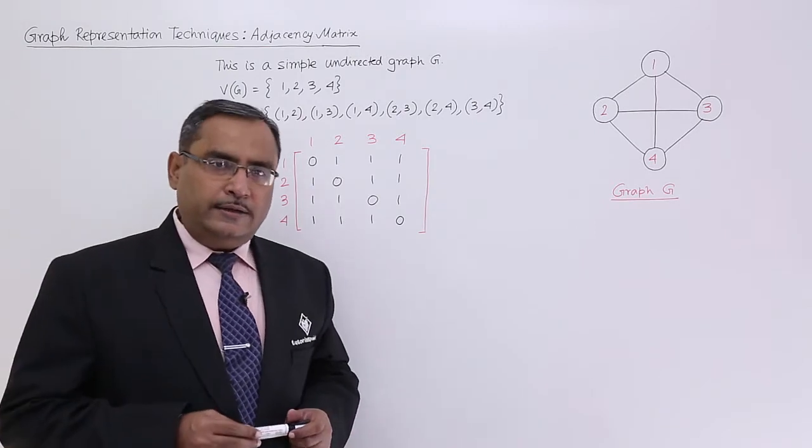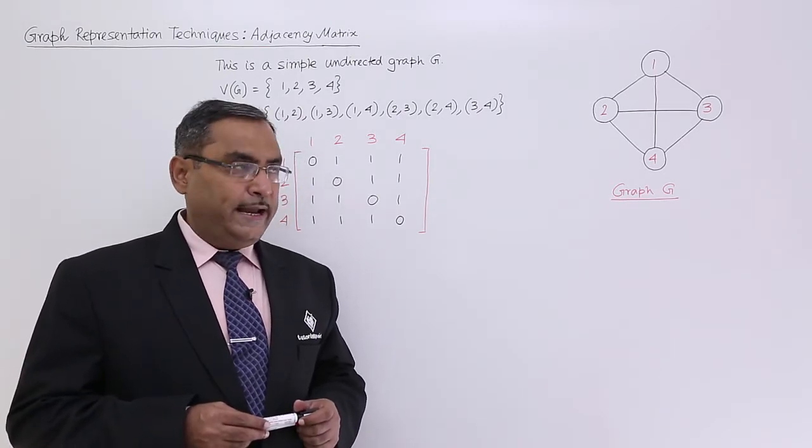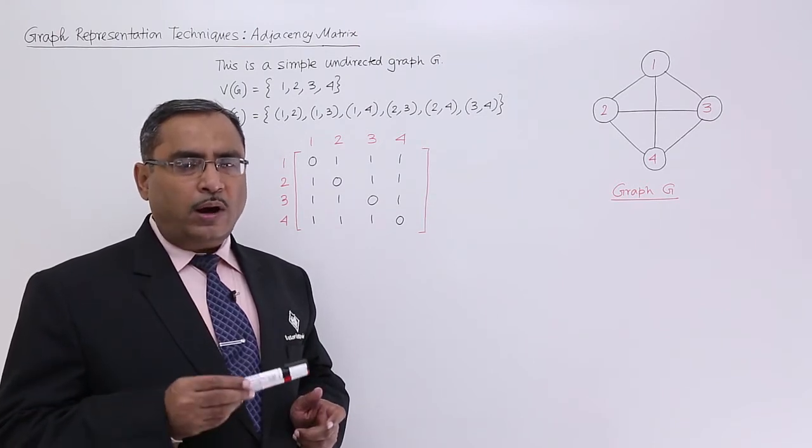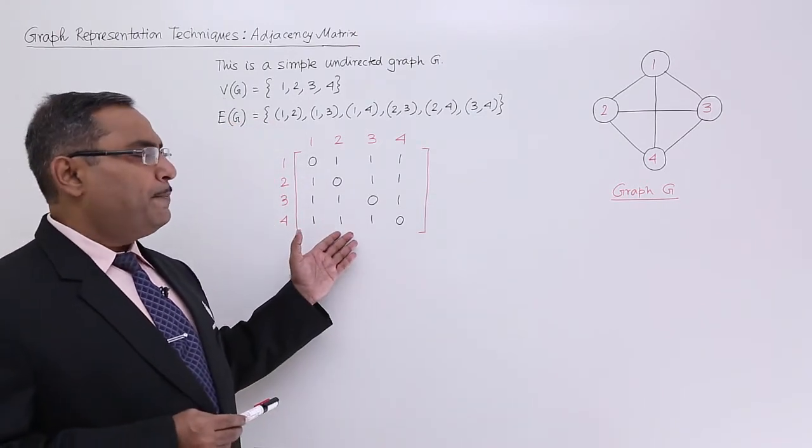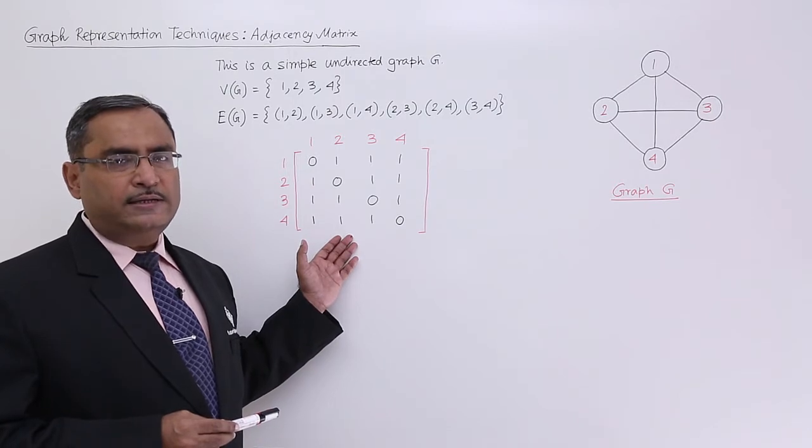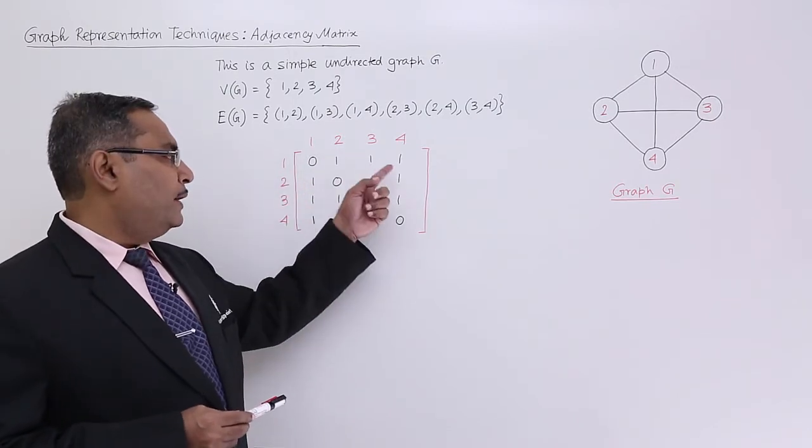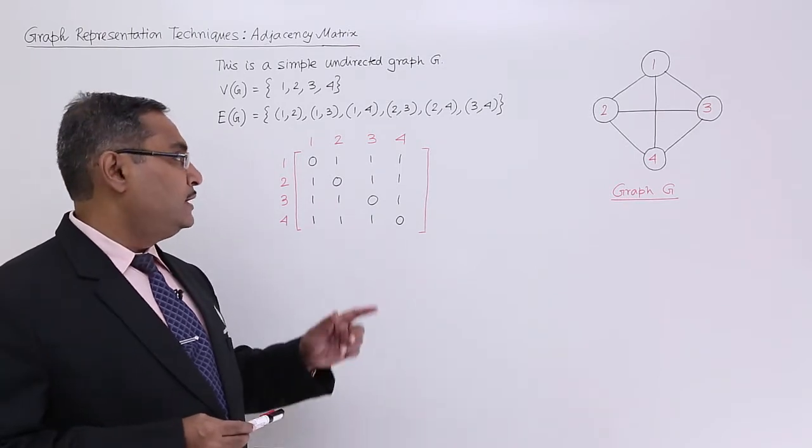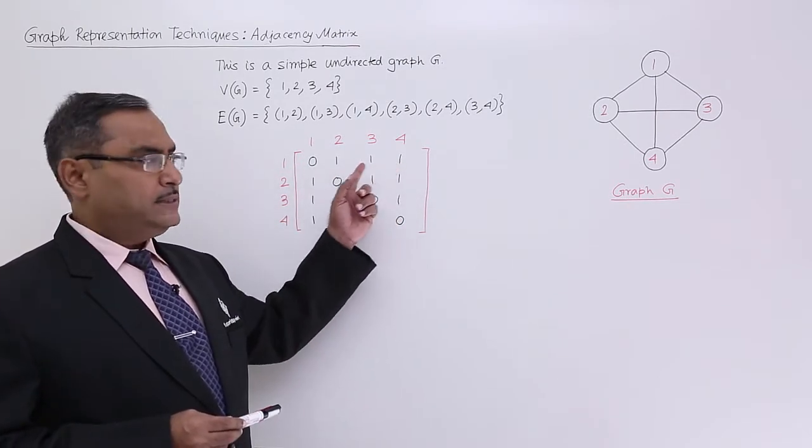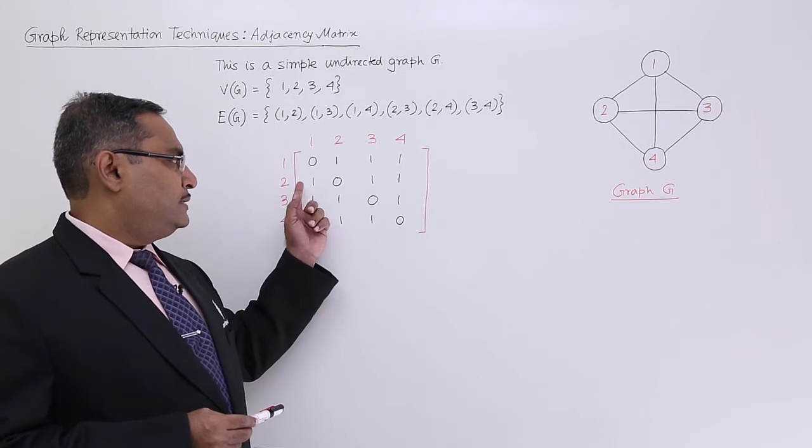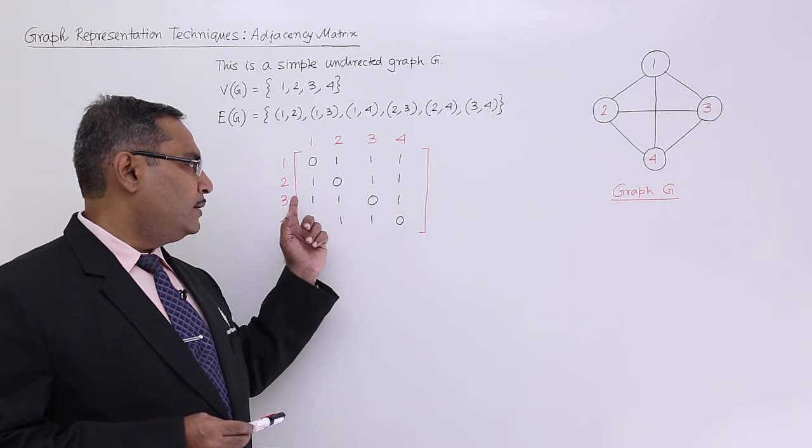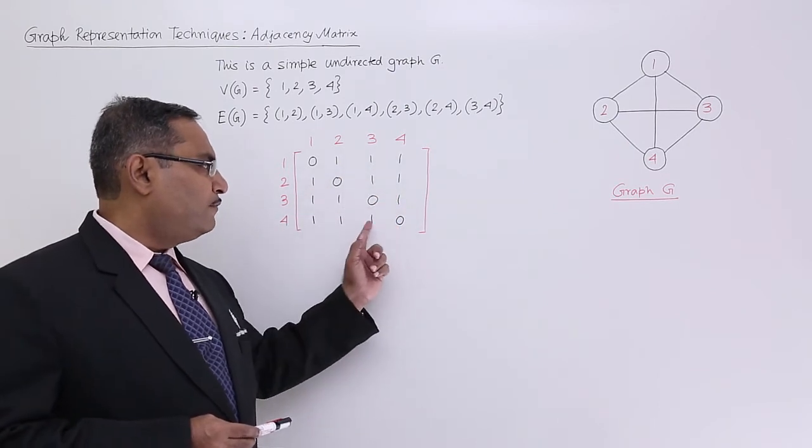This is an undirected graph. That means one edge between 1 and 2 indicates that 2 is adjacent with 1 and 1 is adjacent with 2. In that case, in its adjacency matrix representation, the upper triangular and the lower triangular matrices will remain the same. That means the first row will be same as the first column, the second row will be same as the second column, and that is true for the third row and third column and the fourth row and fourth column.